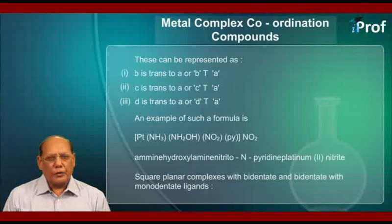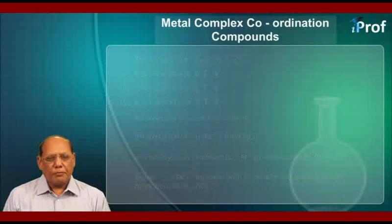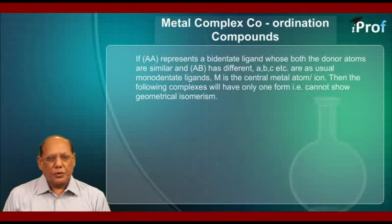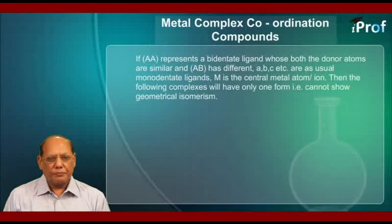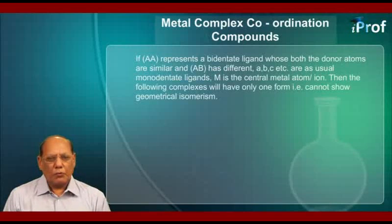Now we have square planar complexes with bidentate and monodentate ligands. If AA (capital A, capital A) represents a bidentate ligand whose both donor atoms are similar, and AB (capital A, capital B) has different donor atoms, while small a, b, c, etc. are monodentate ligands and M is the central metal atom or ion, then the following complexes will have only one form — that is, they cannot show geometrical isomerism.